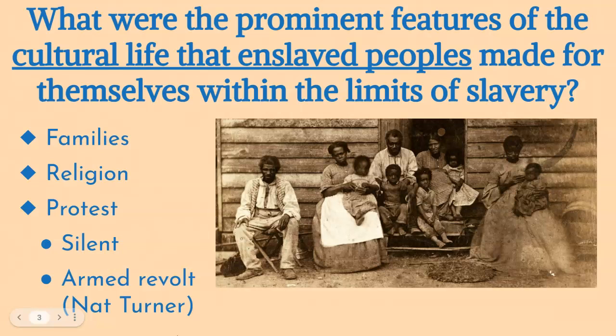Within the harsh confines of slavery, enslaved people built cultural lives that centered on two vital institutions: family and religion. These institutions allowed them to carve out spaces of personal and communal identity, despite the brutal realities of bondage. Family was a cornerstone of enslaved life, providing emotional support and a sense of continuity in an otherwise oppressive environment. Enslaved families gave individuals a way to create their own lives within the boundaries of slavery, maintaining bonds that transcended the control of slaveholders.